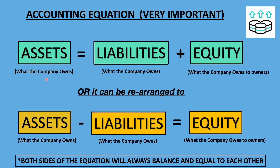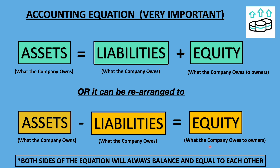Let's take a look at the equation. Assets is what the company owns, equals to liabilities — what the company owes to third parties — plus equity, what the company owes to the owners. Or it can be rearranged to assets minus liabilities equals equity, which is also known as the net assets. This is good for the company because it means that the assets are more than the liabilities, and most likely means that the company is making money. Either way, the double effect will make both sides of the equation balanced and equal to each other at all times.